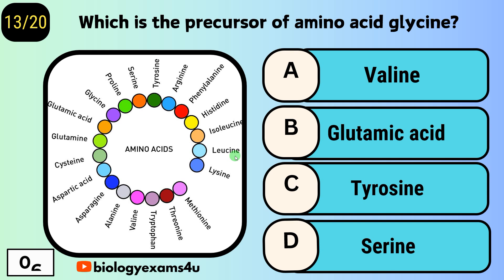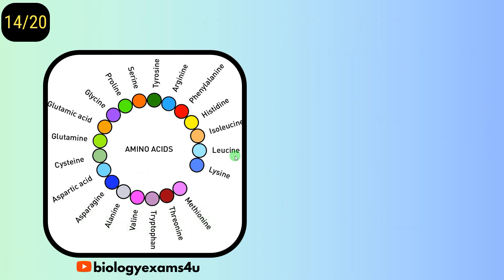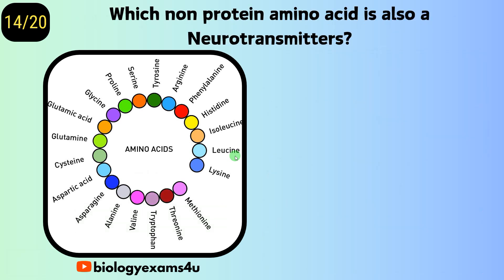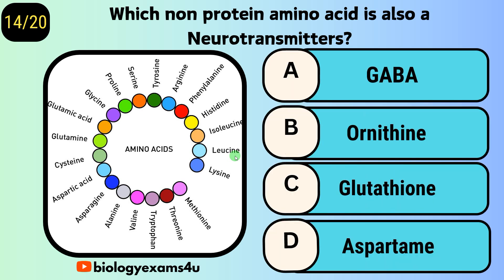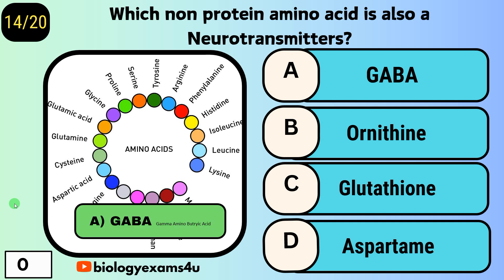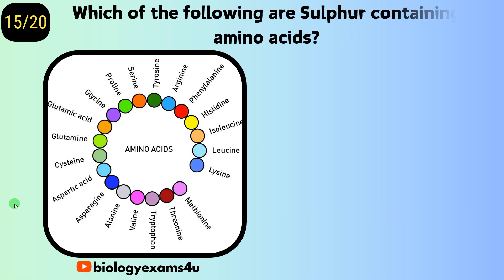Question number thirteen: which is a precursor of the amino acid glycine? Option A, valine; option B, glutamine; option C, glutathione; option D, aspartate. Question number fourteen: which non-protein amino acid is also a neurotransmitter? Option A, GABA; option B, ornithine; option C, glutathione; option D, aspartate. The answer is GABA, or gamma-aminobutyric acid.